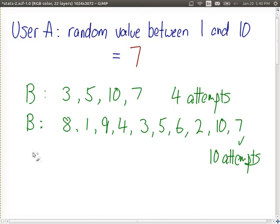And this is the worst case for B. 10 attempts. They had to try all values before they finally got there. So when we have 10 values to choose from, the worst case in terms of the number of attempts is 10.